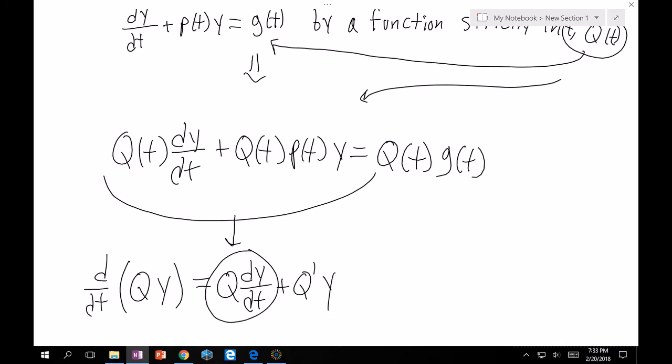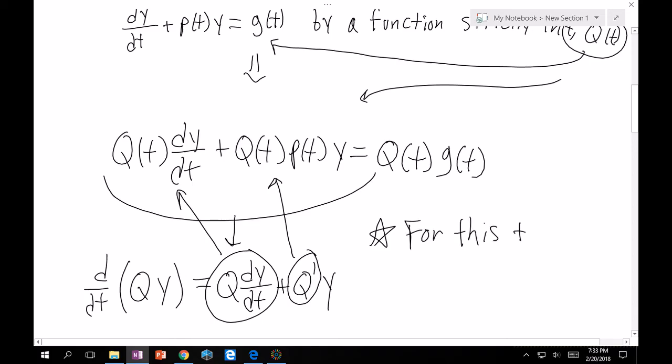Notice Q dy/dt is exactly what I have right here. And then for this to work, all I need is that Q prime must equal Q times p. So let's note that. For this to work, dQ/dt must equal Q(t) times p(t). Great.